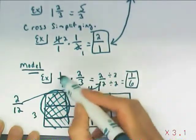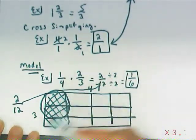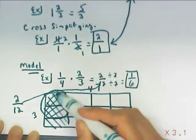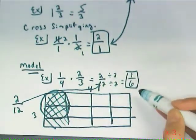So with our model, you model the fourth, you shade the fourth, you model the 2 thirds, you shade the 2 thirds. Wherever they overlap is actually going to be your answer.